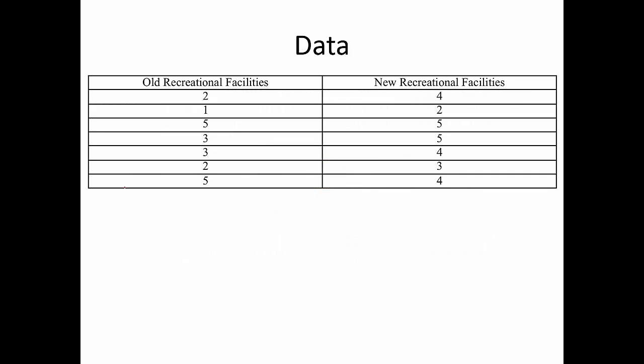The first thing is the data. You'd set this up in SPSS where each participant is their own row, with columns for old versus new. In this study, participants rated the old facilities and then rated the new facilities, and we're trying to see if the new ones are better.